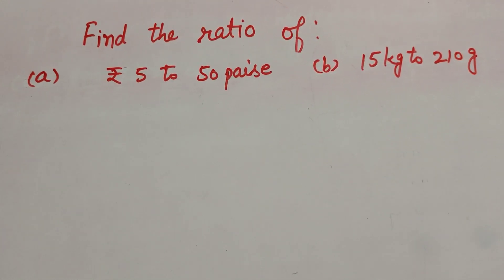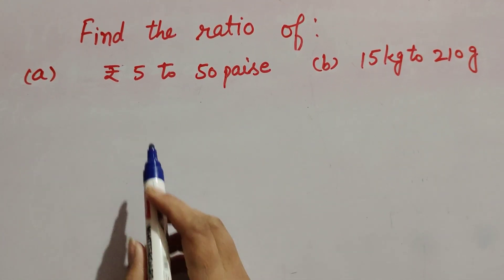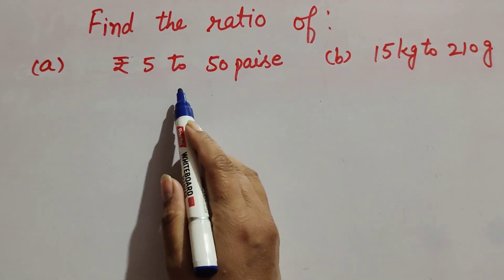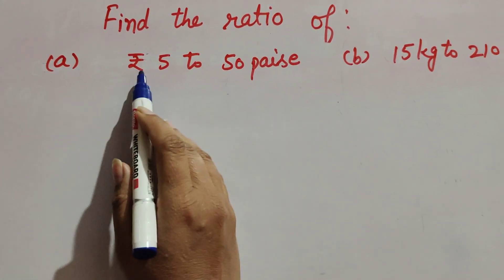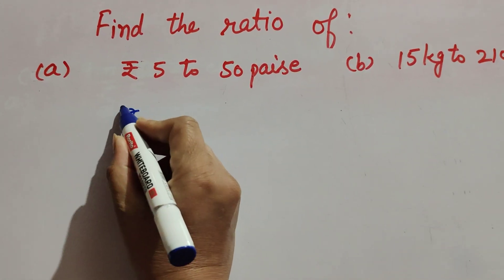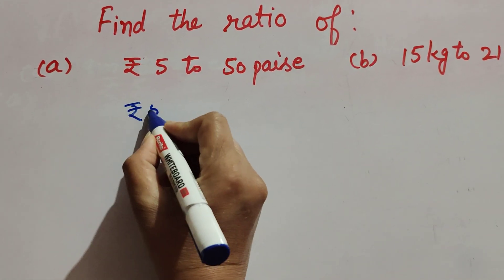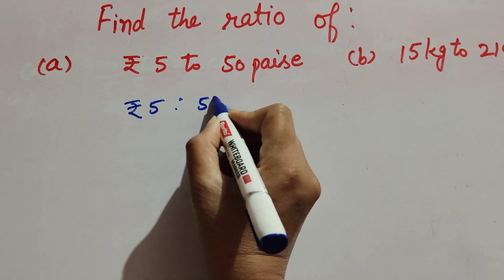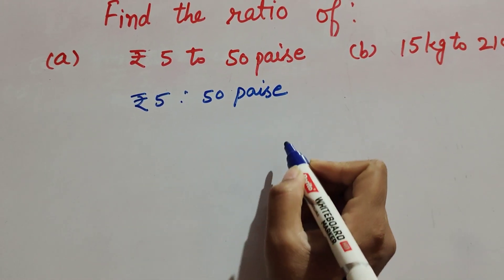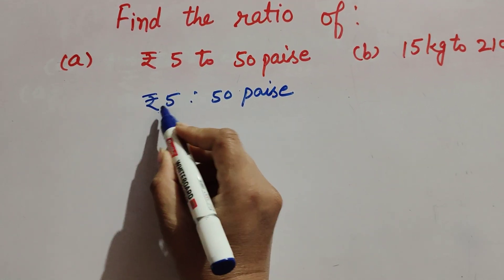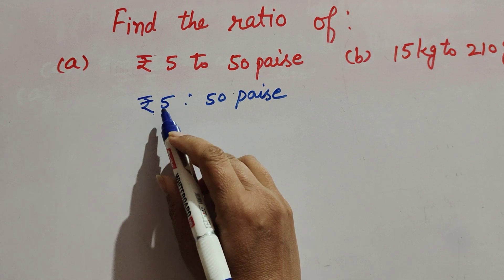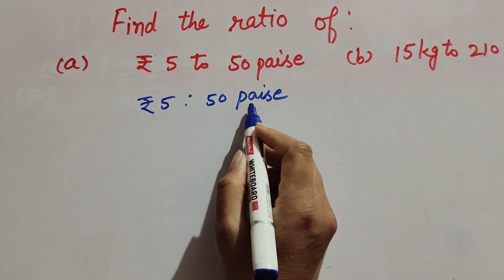Hello friends, welcome to my channel. In this video we discuss finding the ratio — there are two questions given. In part A, rupees 5 to 50 paise, we find their ratio. We write it as rupees 5 ratio 50 paise. Their units are different, so first we make their units equal — we change rupees to paise or paise to rupees.